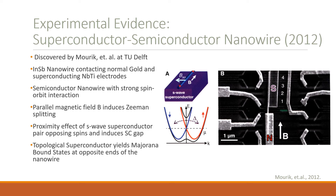Experimental evidence of Majorana bound states was discovered in 2012 by Mourik et al. at the Technical University of Delft in a superconductor-semiconductor hybrid nanowire system. Their device consisted of an indium antimonide nanowire contacting a normal gold electrode and a superconducting niobium-titanium electrode. The semiconductor nanowire had strong spin-orbit interactions, and they applied a strong magnetic field parallel to the nanowire, which induces Zeeman splitting. The proximity effect of the S-wave superconductor pairs opposing spins in the nanowire and induces a superconducting gap.